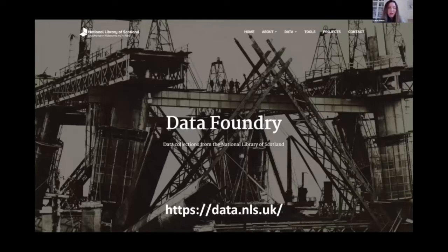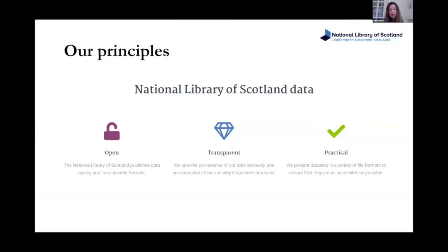The Data Foundry is a very simple platform — just a WordPress site, nothing fancy — with three main principles. The first is openness: we make our data available in openly reusable formats. The second is transparency, as mentioned before. The third is practicality: we want to make sure there aren't too many barriers to use, so we've gone for simple, straightforward tiered downloads and a variety of file formats where possible — things like ALTO XML but also plain text for beginning users — hoping to be as accessible as possible.